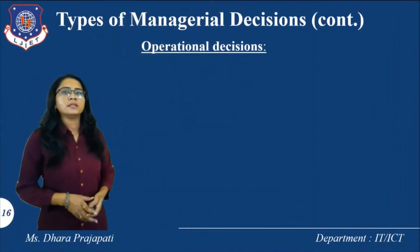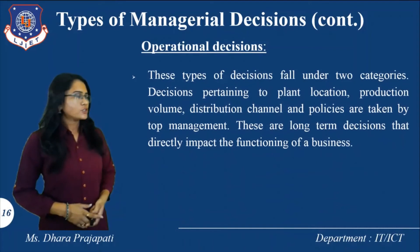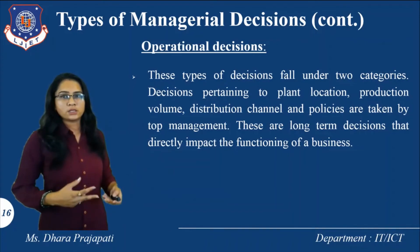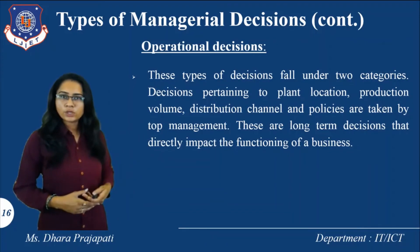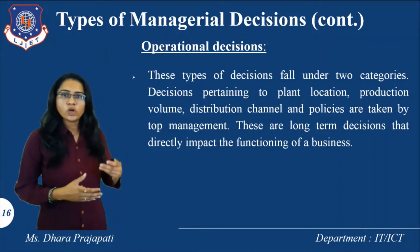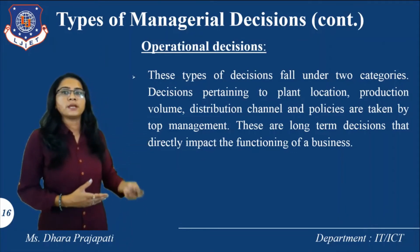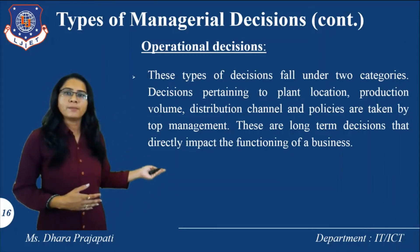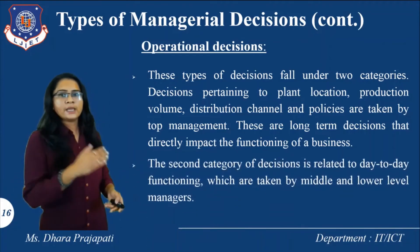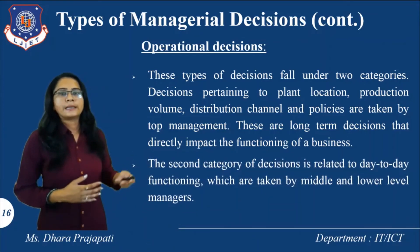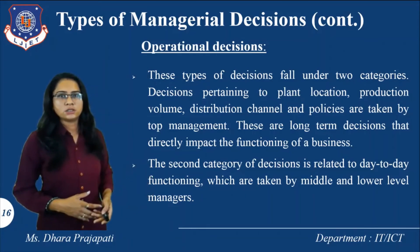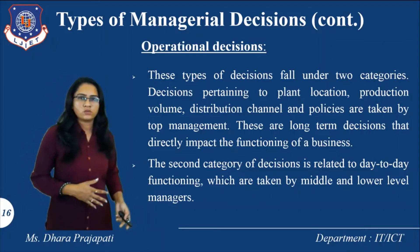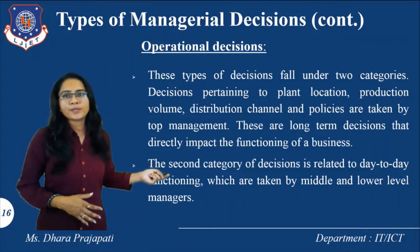Operational decisions fall under two categories. The first involves decisions pertaining to plant location, production volume, distribution channels and policies, taken by top management — these are long-term decisions that directly impact the functioning of the business. The second category is related to day-to-day functions, which are taken by middle and lower level managers. These are called operational decisions.